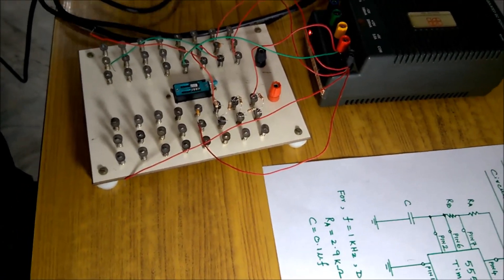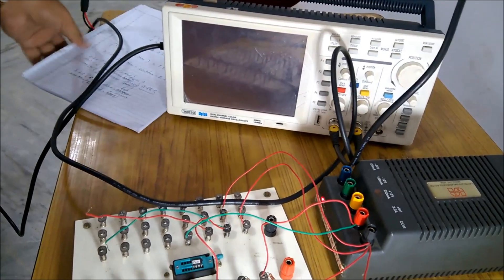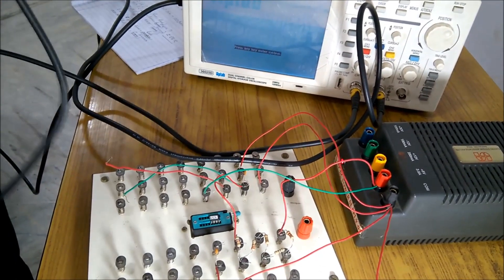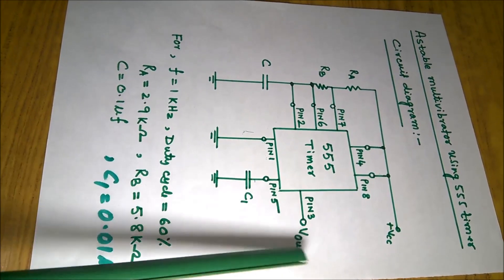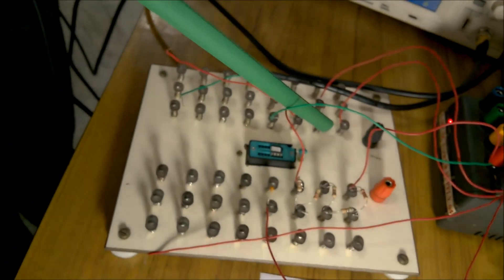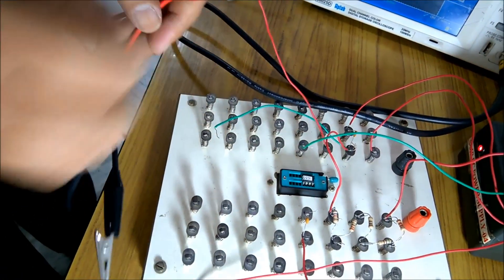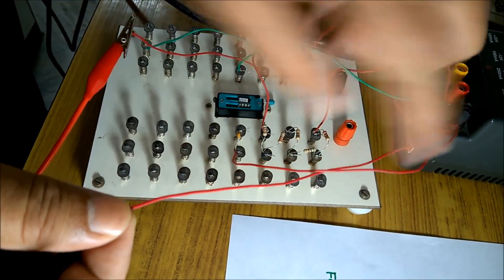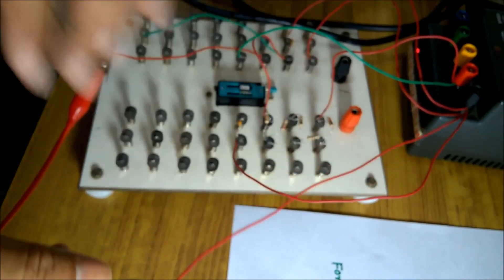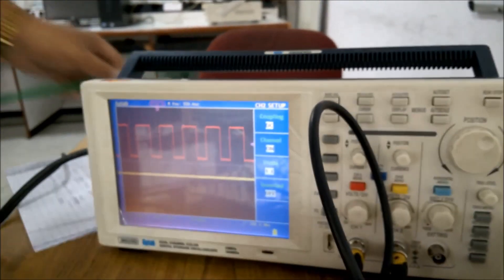For waveforms, we take channel 1 on the oscilloscope for the output waveforms. The output pin is pin number 3. I have connected the red wire from pin 3 to the oscilloscope, along with a wire to the common ground. After connecting, you can see immediately we are getting rectangular waveforms. Now I will come to the analysis of the rectangular waveforms.